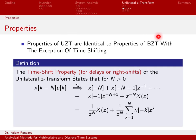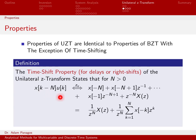The time shift property, when we are delaying — which is the same thing as saying shifting to the right — this property says that for the unilateral Z-transform, which deals with signals that always look like this, we assume we have a unit step that turns them on at time zero. In the time domain, if we shift to the right, which means n is some positive number, we've shifted this to the right.